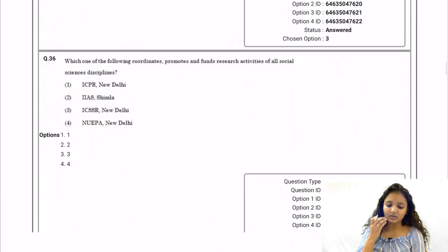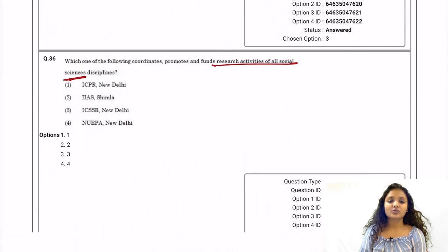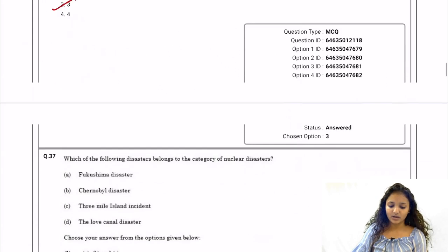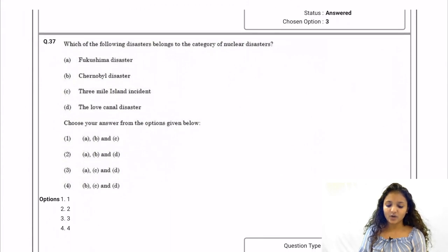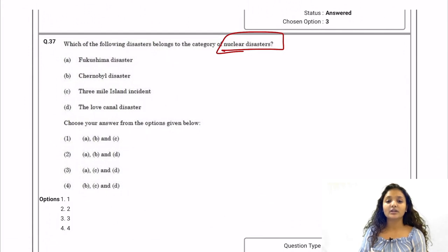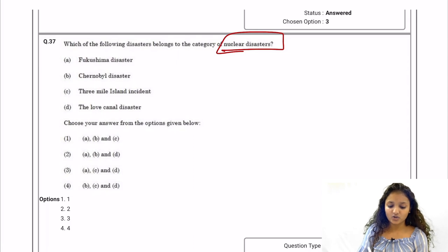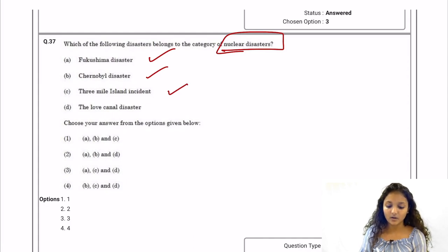Question 36: Which organization promotes and funds research activities of all social sciences disciplines? The correct answer is ICSSR, New Delhi — option number three. Question 37: Which disasters belong to the category of nuclear disasters? Fukushima, the B-part incident, and Three Mile Island are nuclear disasters, but Love Canal disaster is not. Option one — A, B, and C — is correct.